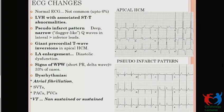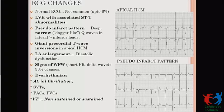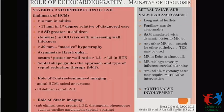ECG plays a very important role in diagnosing HCM. Normal ECG is uncommon — only 6% of patients. LVH with associated ST-T changes is quite common. A pseudo-infarct pattern with deep narrow dagger-like Q waves in lateral more than inferior leads can be seen. Giant precordial T-wave inversion, LA enlargement as a surrogate of diastolic dysfunction, signs of WPW syndrome, and arrhythmias including atrial fibrillation in up to 20% of patients, SVTs, VPCs, and VT — sustained or non-sustained — which can degenerate into VF, are all seen.